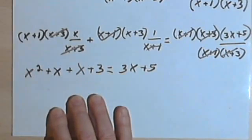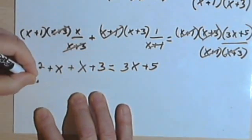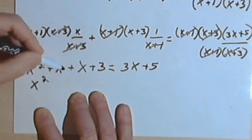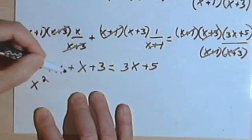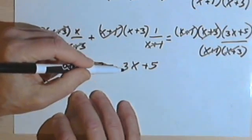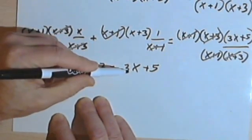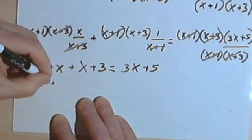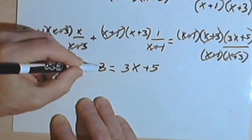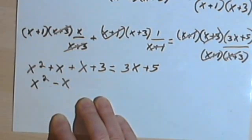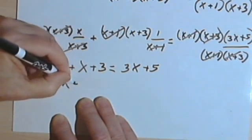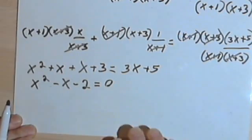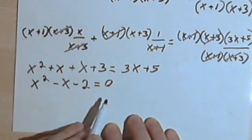Now let's simplify. I've got x squared plus x plus x plus 3 on the left side, equal to 3x plus 5. I want to get all terms on the left side and set it equal to zero. I have x plus x which is 2x on the left and 3x on the right, so subtracting 3x gives negative x. Then I have 3 on the left and 5 on the right, so subtracting 5 gives negative 2. That leaves x squared minus x minus 2 equals zero, and I'll factor that.